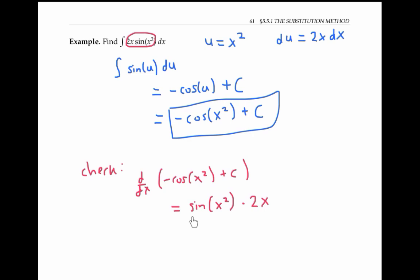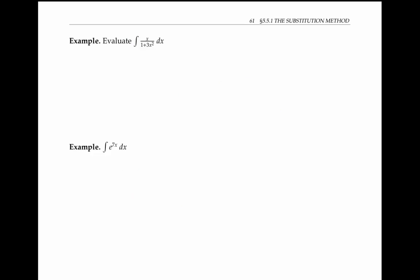Notice that we use the chain rule when taking the derivative to check our answer. Let's try some more examples of u substitution. When looking for what to substitute as u, it's good to look for a chunk that's in the integrand, whose derivative is also in the integrand. It's also good enough to just have a constant multiple of the derivative in the integrand.